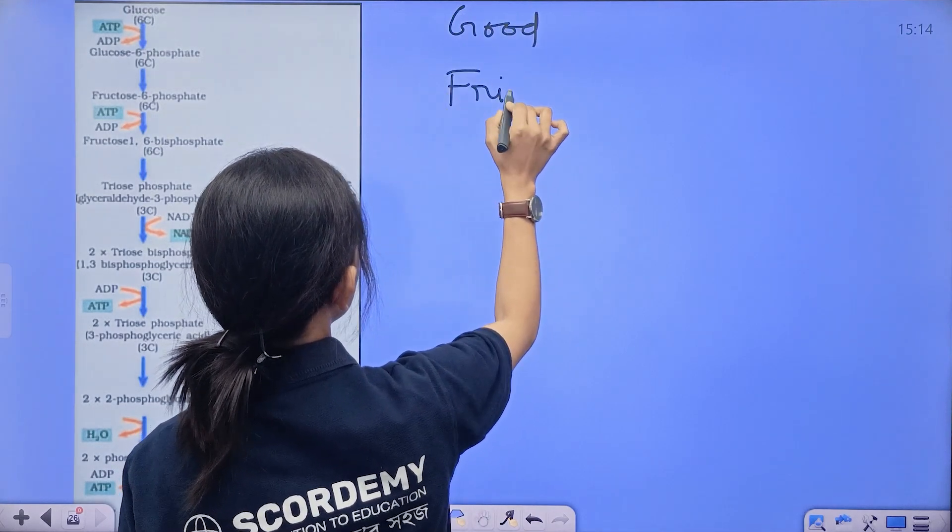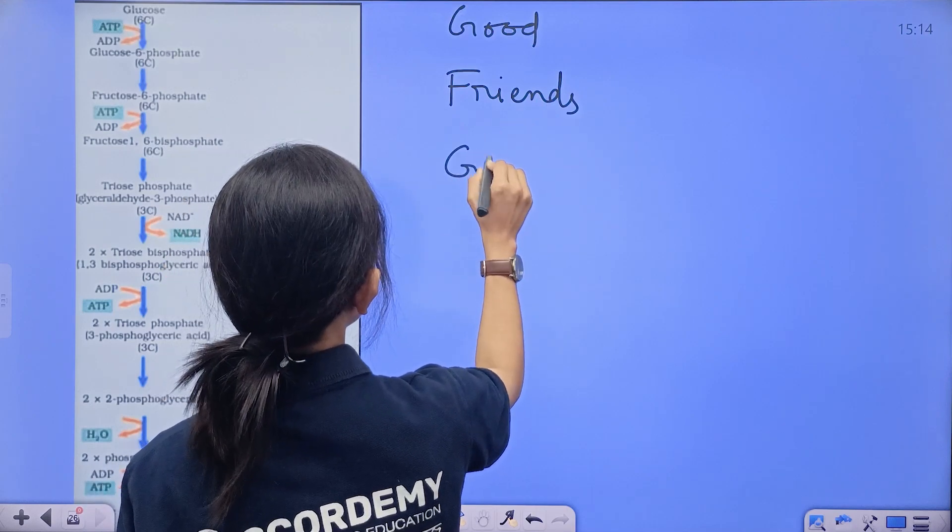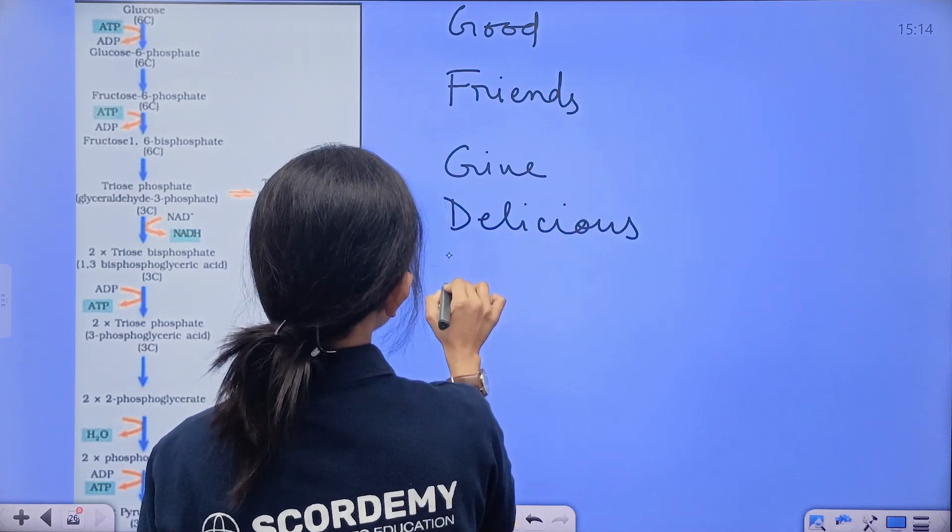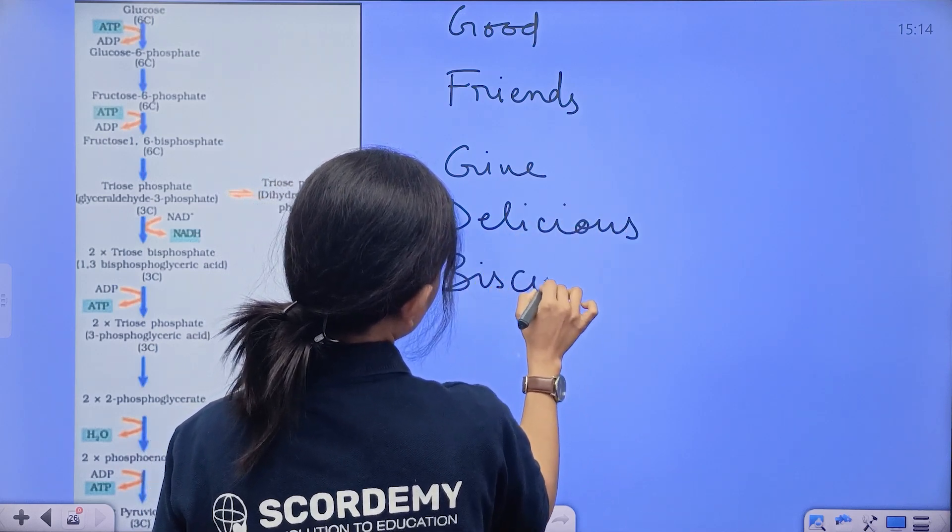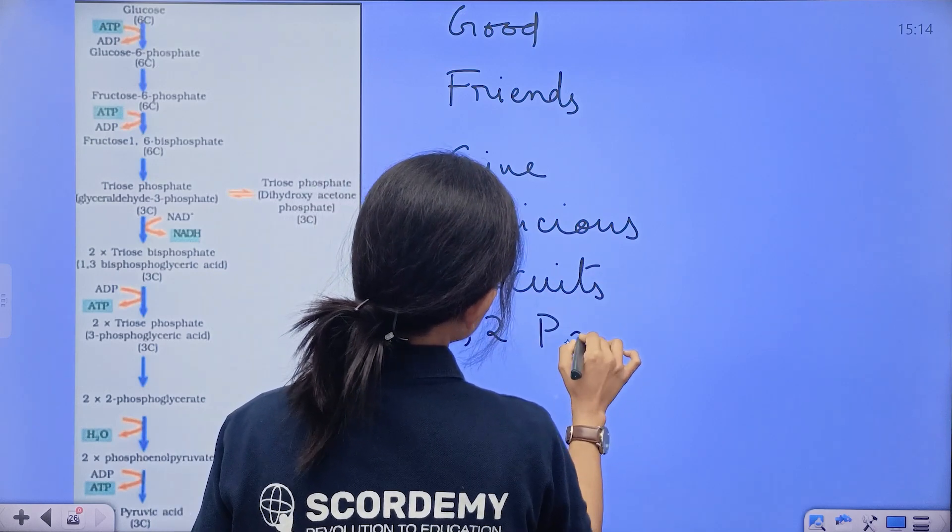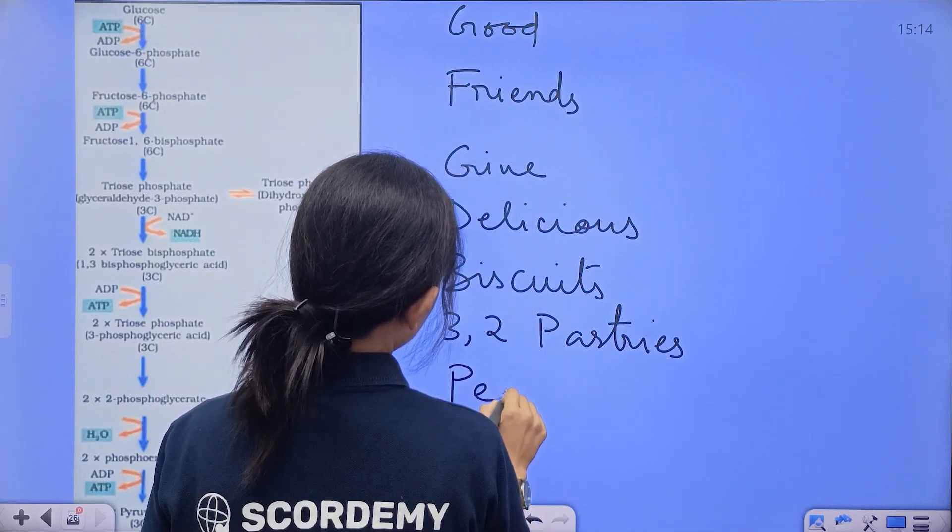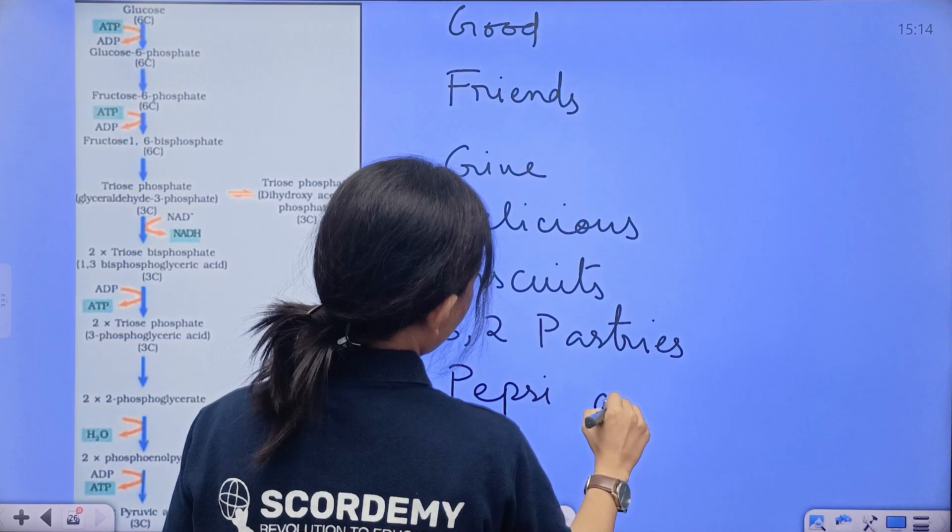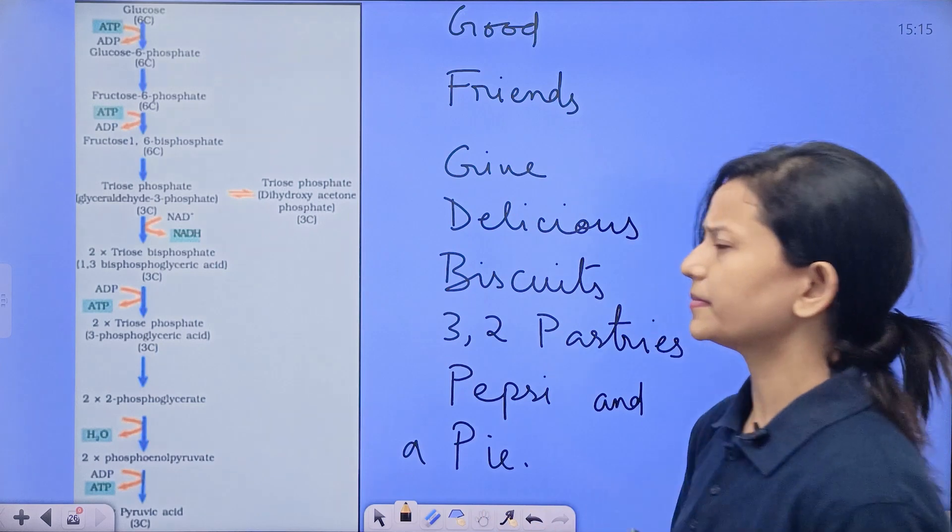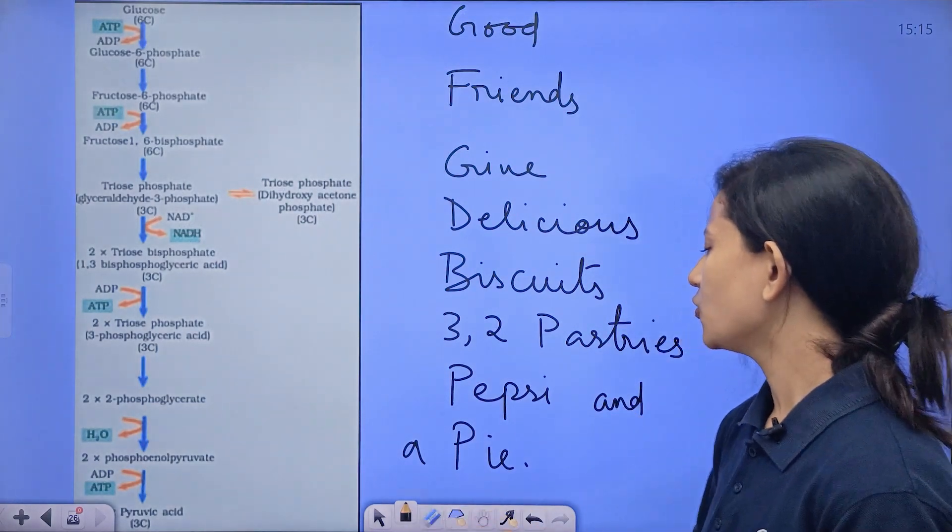Okay, so I'm writing a sentence: Good friends give delicious biscuits, 3,2 pastries, Pepsi and a pie.